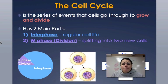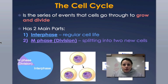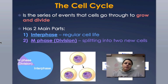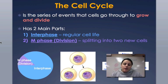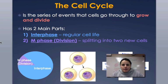Hi class. Today I want to talk about the cell cycle. We just finished going over DNA, its structure, and how it replicates. And this whole chapter is about how cells divide into more than one cell. The life cycle of a cell growing and dividing is called the cell cycle. So we're going to talk about the different parts that it's divided up to.